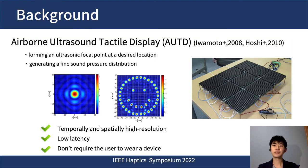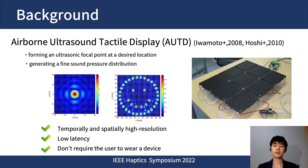AUTD can remotely provide tactile sensation by driving a large number of ultrasonic transducers in an array. It can form focal points at a desired location or generate fine sound pressure distribution. Other tactile presentation devices have been proposed, but AUTD has some advantages such as temporally and spatially high resolution, low latency, and does not require the user to wear a device.